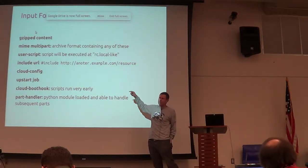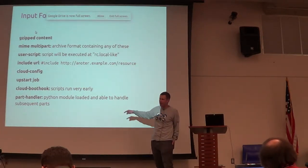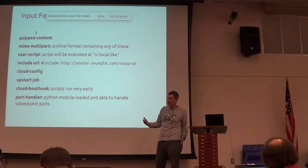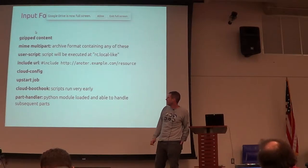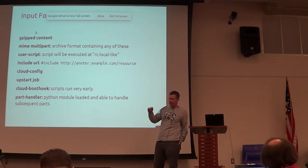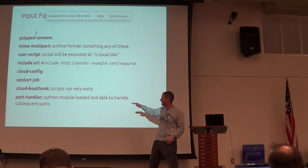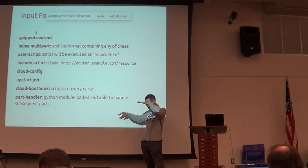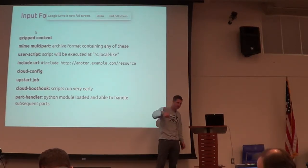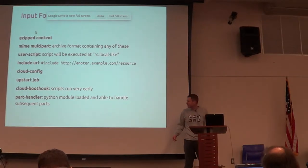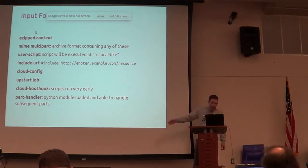Each of the parts in a MIME archive has a MIME type. If you say your part handler handles types text slash go cubs, then any time that MIME, after your part handler is at the beginning, and anywhere subsequently that you get one of those MIME types, you'll get called as a handler.